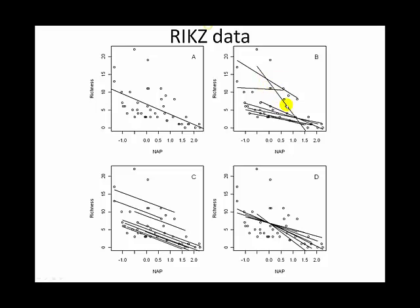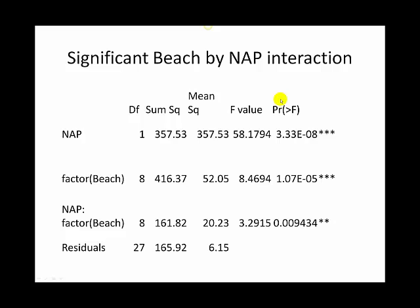Looking at the ANOVA table for the interaction model, we get a strong effect of NAP as expected, beaches have a strong effect, and the NAP by beach interaction term is also highly significant. This suggests that the model with both varying intercepts and slopes per beach is a good model, because the relationship between NAP and richness varies depending on which beach you're on — reflected in both the significant beach factor and the significant interaction term.